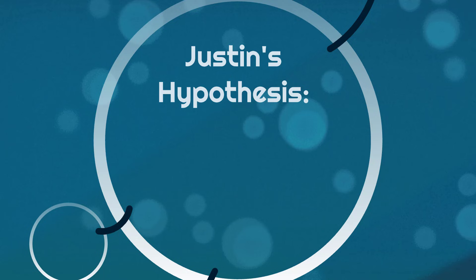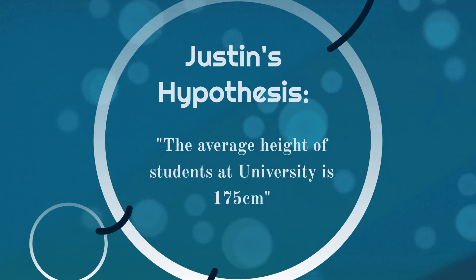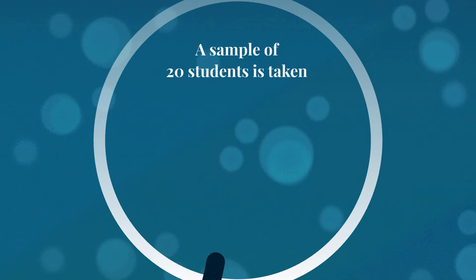I'm going to present you with a hypothesis. This is my hypothesis, Justin's hypothesis: The average height of students at university is 175 centimeters. Now let's ignore the potential differences in height between men and women. Let's just keep it simple. While we call this a hypothesis in normal English, the term hypothesis actually has a specific meaning in statistics as something which we can put to the test. So let's try and do that by taking a sample.